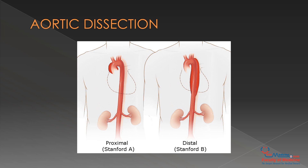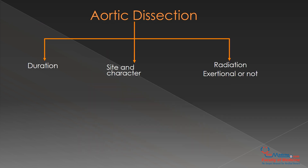The next disease is aortic dissection. This is a condition where the wall of the aorta is torn apart, such that blood starts to escape from inside the aorta into its wall, and even ruptures to the outside. When we analyze the pain of aortic dissection, we ask about duration — which is seconds to minutes — site, which is substernal, and character, which is tearing. It radiates to the back but is not exertional; it is a sudden pain not preceded by physical activity.